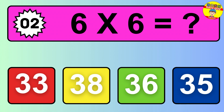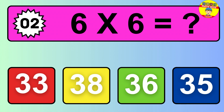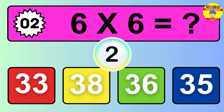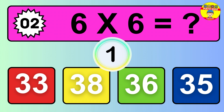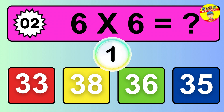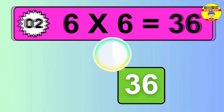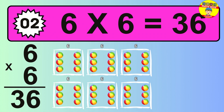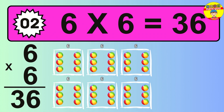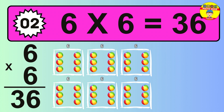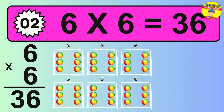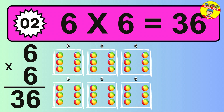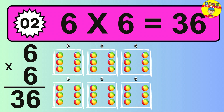Question 2. 6 times 6 equals what? The answer is 6 times 6 is 36. To calculate, we have 6 groups with 6 balls each one. So how many balls do we have? 36 balls.